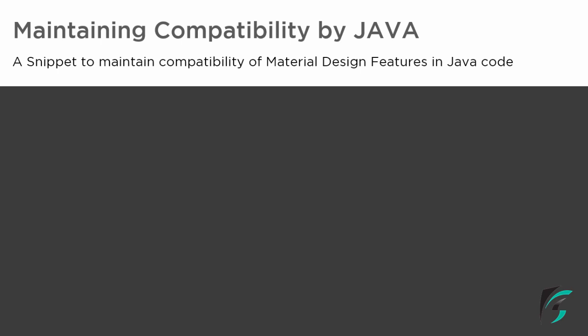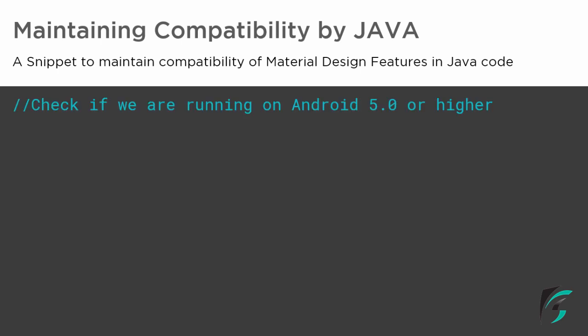I'll be showing you a small snippet that has to be implemented in our MainActivity.java to solve this issue. The very first step is to check if we are running on devices having API level 21 or above — that is, Android 5.0 or higher — in other words, we need to check if the device is Lollipop version or higher.